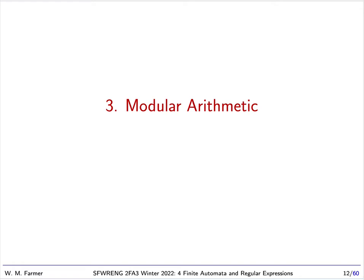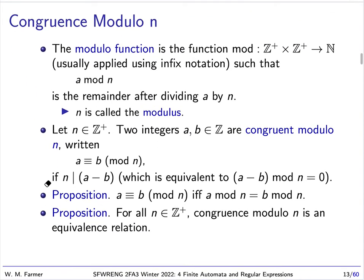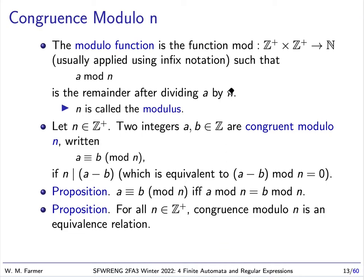Today we have a couple more background items to look at. The first is modular arithmetic. There's a function you've probably seen before, which is called the modulo function. It takes two positive integers and gives back either zero or a positive integer, a natural number. This function is usually written in infix notation. The value of a mod n is the remainder after dividing a by n.